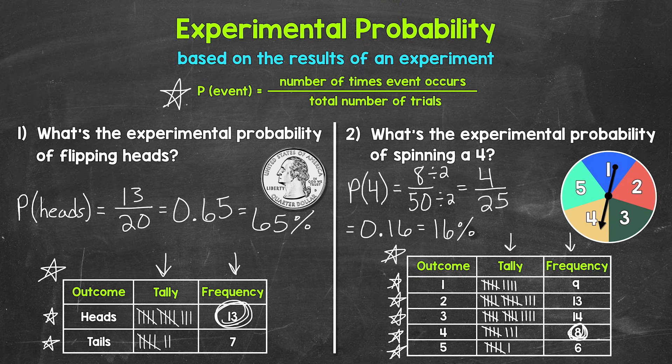Now, one last thing I do want to mention here is that as the number of trials increase, so the more and more trials, the experimental probability should get closer and closer to the theoretical probability, the expected probability. Basically, the more trials, the closer we get to what's expected. This is what we call the law of large numbers.